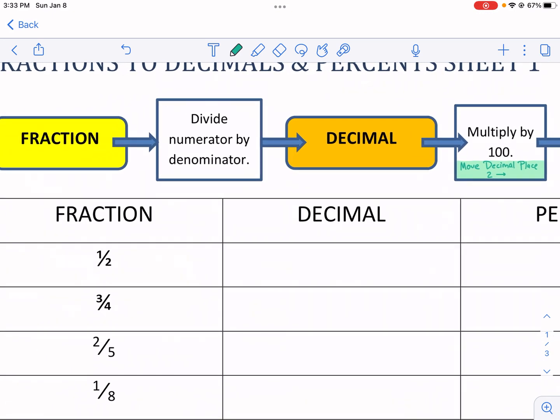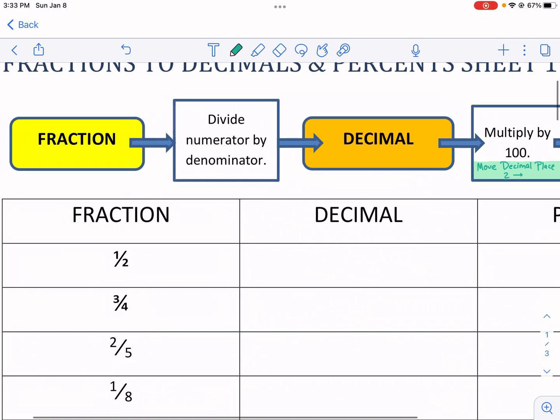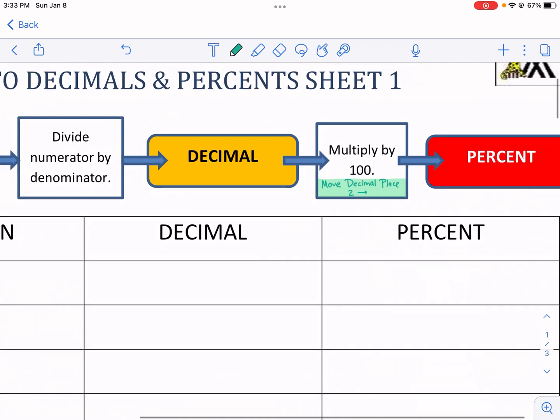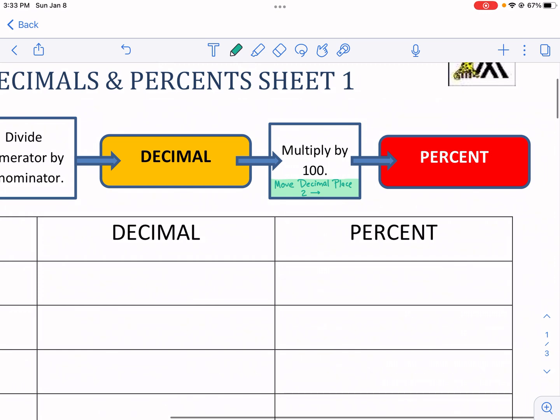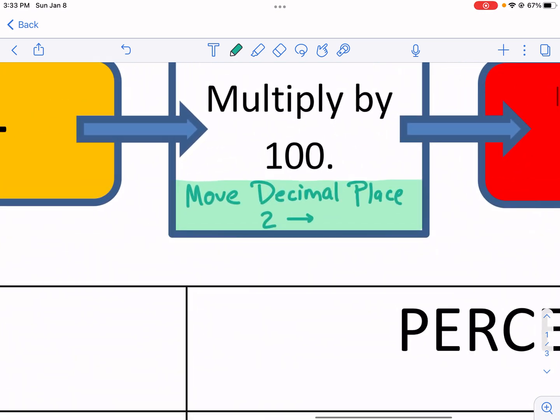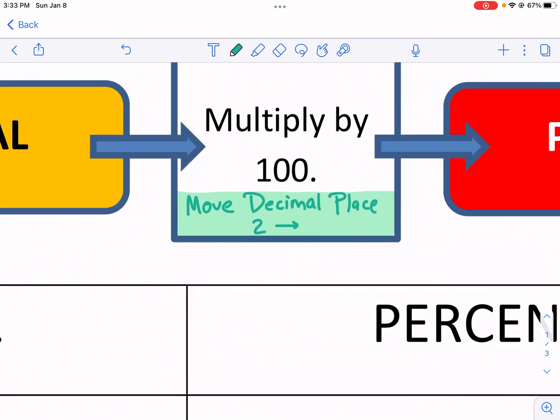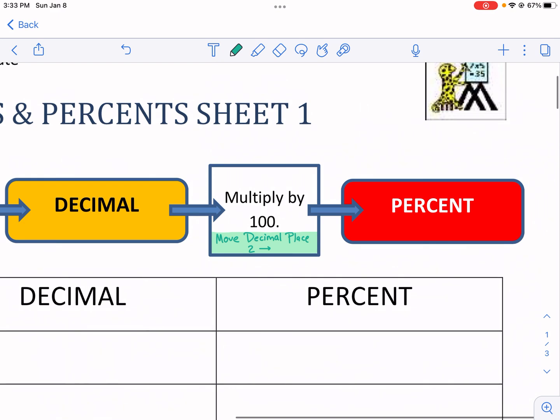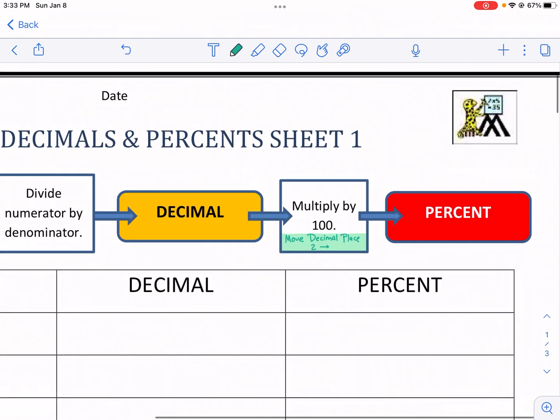So we're going to start with the fraction, and then what we're going to do is divide the numerator by the denominator to get the decimal. Now I'm going to show you another way to do that with some of these. It's a nice shortcut that makes it a lot quicker. Once we have our decimal, we're going to multiply that by 100. And I have here that you're going to move the decimal place twice to the right. We're going to make this number bigger to get our percent.